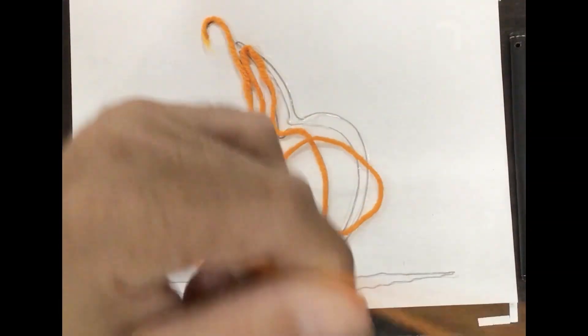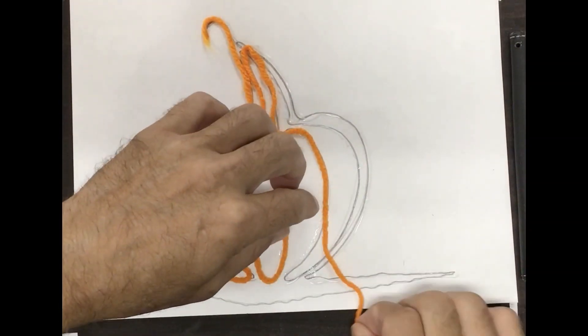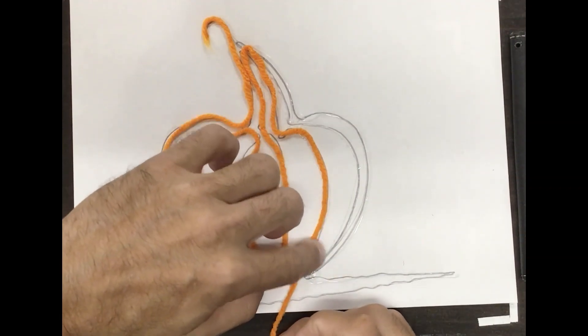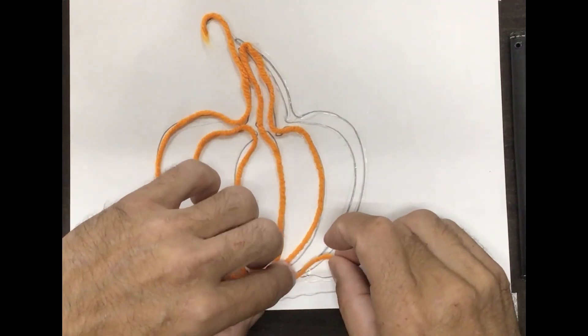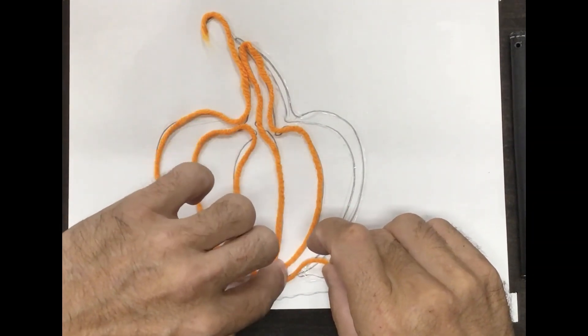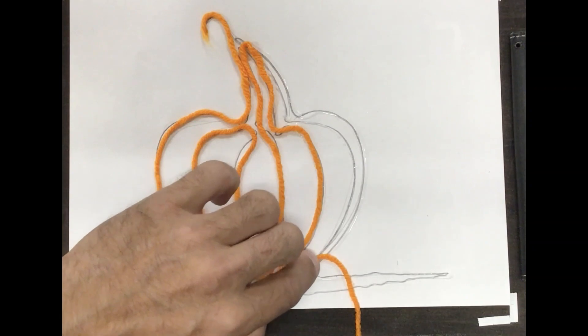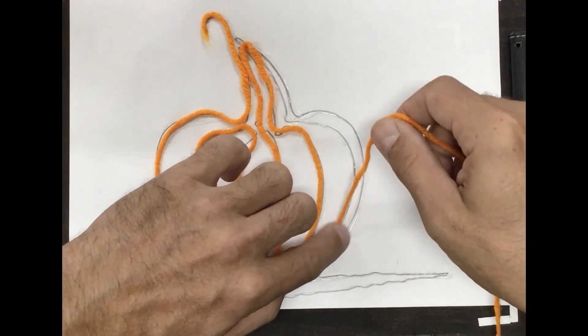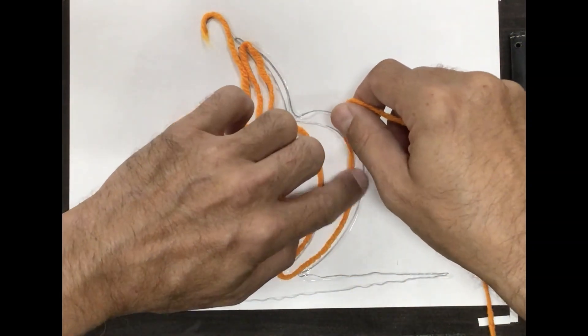What's neat about the yarn too is that you're not gonna really cross over the same line. When you're doing it with your pen, a lot of times it's tempting to cross over the same line, but with this you're pretty much always gonna remember not to.